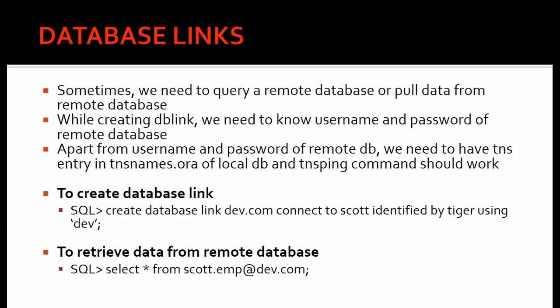Sometimes we need to query a remote database or pull data from a remote database. While creating a DB link, we need to know the username and password of the remote database — without those you cannot connect. Apart from credentials, we need to have a TNS entry in tnsnames.ora on the local DB, and the TNS ping command should work. Without networking between both databases, the DB link will not work.